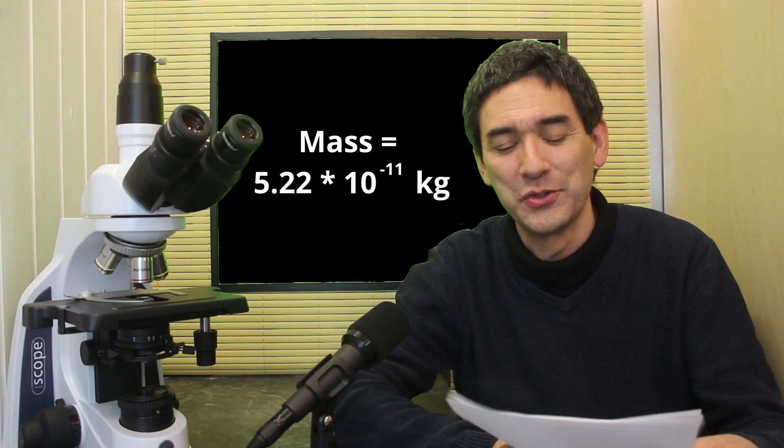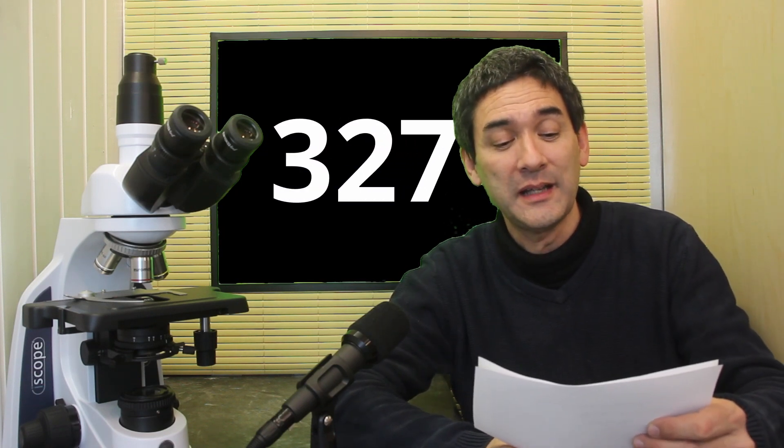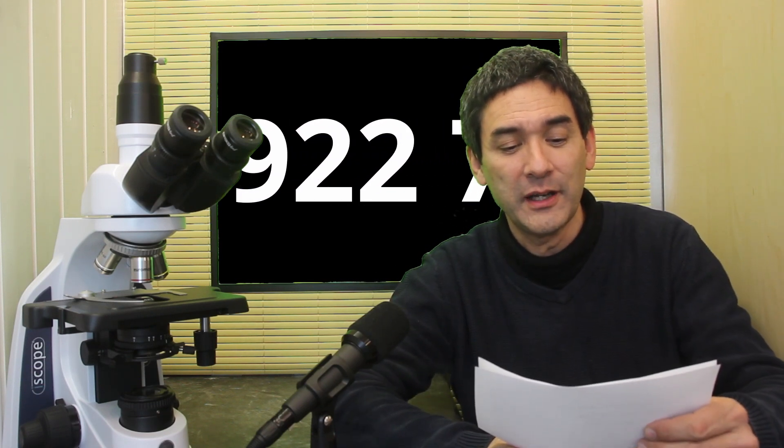I cannot imagine those numbers. They are so small. But at least I now have the values that allows me to pull everything together. The 17.1 kilograms divided by the mass of a cell, the 5.22 times 10 to the power of negative 11 kilograms, gives me now the final answer. Drumroll. Here it is. The number of cells in the Christmas tree is 327,922,745,017 cells.